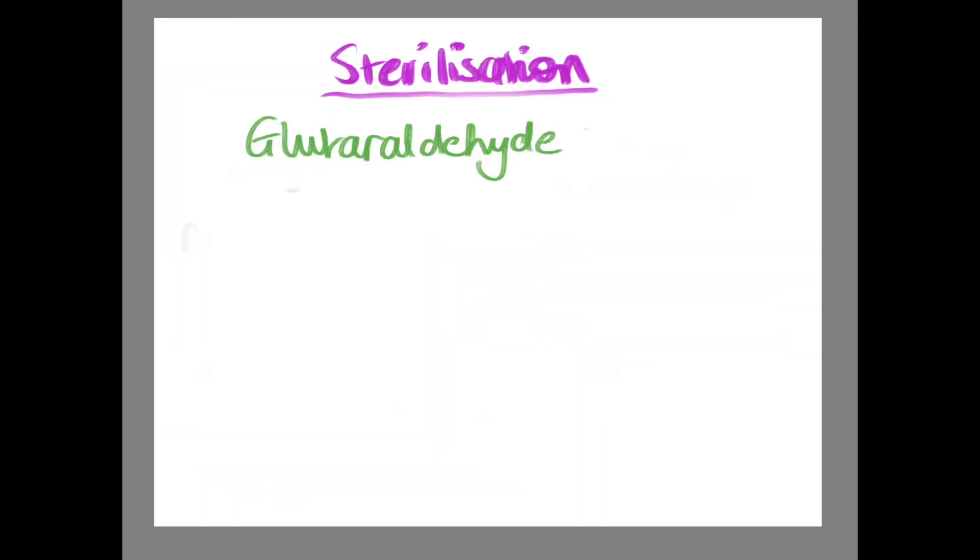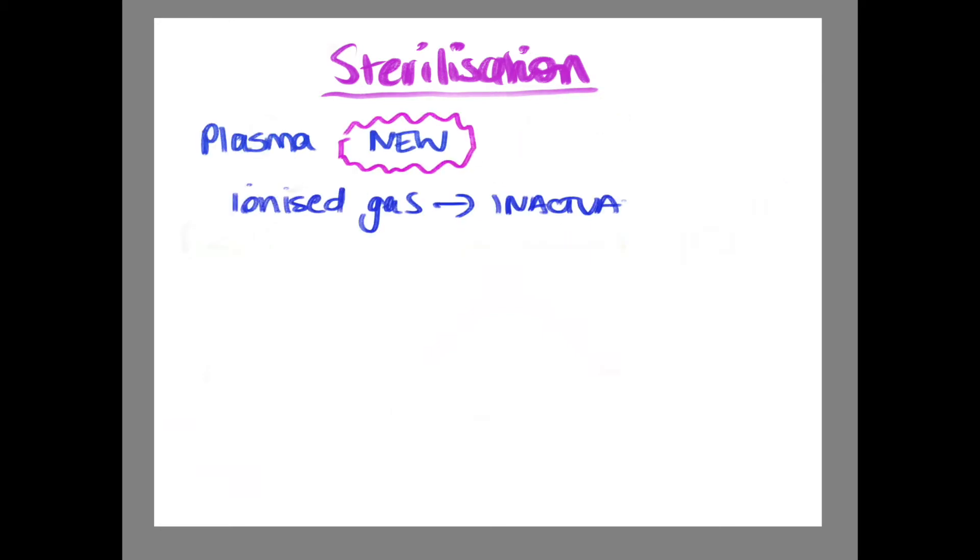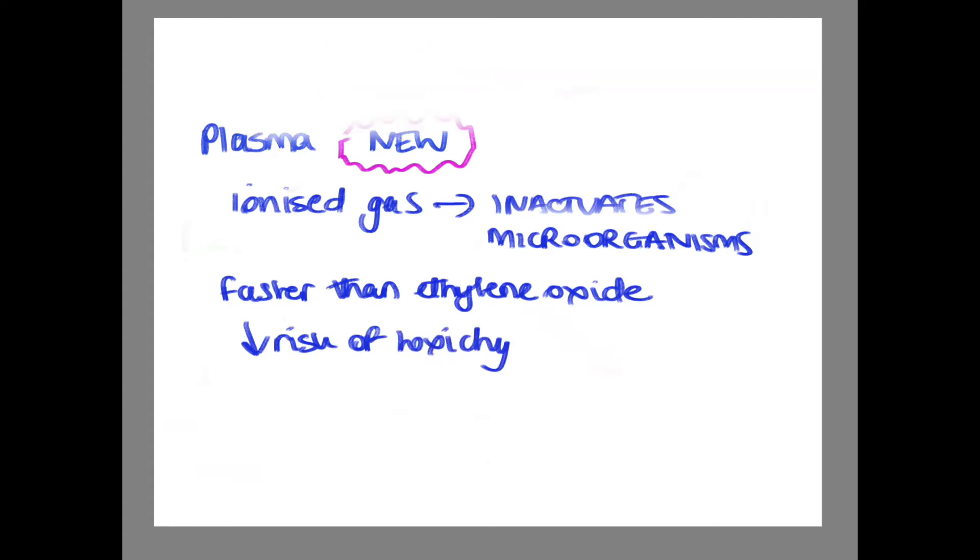Glutaraldehyde 2%: This method tends to be used for optical equipment such as scopes. If used for less than around 10 hours, then sterilization is less likely to occur and equipment may only be disinfected. Plasma is a newer technique. This is an ionized gas containing free radicals which inactivate microorganisms. It is a shorter sterilization time compared to ethylene oxide with a lower risk of human toxicity.